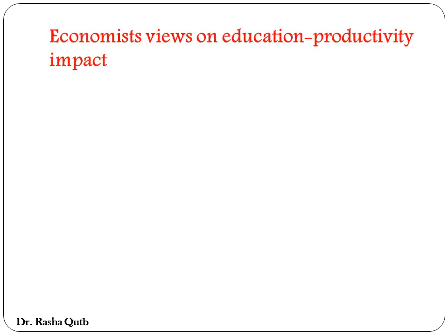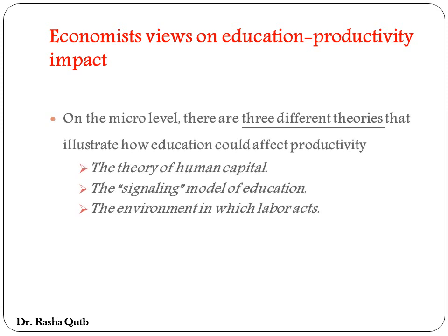We will continue with the impact of education on productivity growth at a micro level. We have three main theories that illustrate how education can affect productivity. The first is the theory of human capital, with pioneers Becker and Mincer, who worked at the micro level. These three theories will be illustrated in the third section. According to the theory of human capital, Becker argued that education teaches workers valuable skills which make them more productive than uneducated or semi-educated persons.